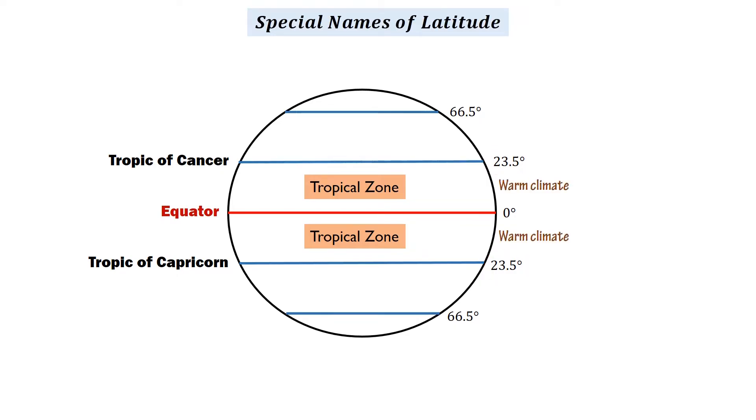On the other hand, the Arctic Circle is located at 66.5 degrees north, and the Antarctic Circle is at 66.5 degrees south. The zones between the Tropic of Cancer and the Arctic Circle in the northern hemisphere, and the Tropic of Capricorn and the Antarctic Circle in the southern hemisphere, are called temperate zones.